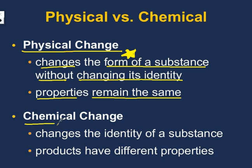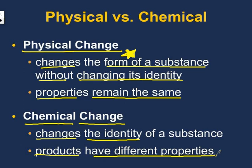If you have a chemical change, this is a change in the identity of a substance — you no longer have the same thing. It changes the identity, which means you have a new substance, and the products are going to have different properties. So to summarize: if it's still the same substance from what you start with to what you end up with, it is a physical change. If you end up with something new, then it is a chemical change.